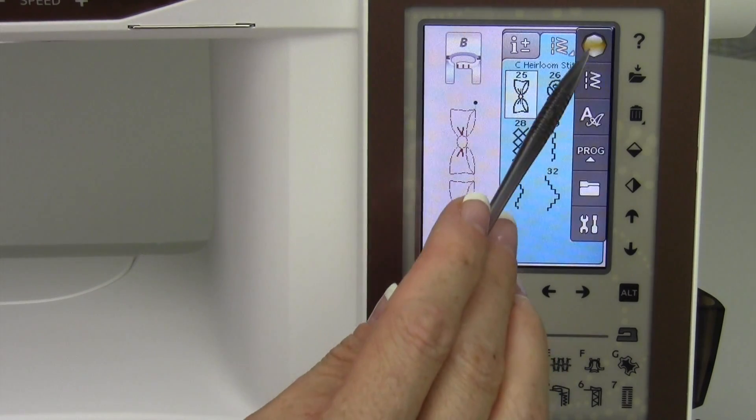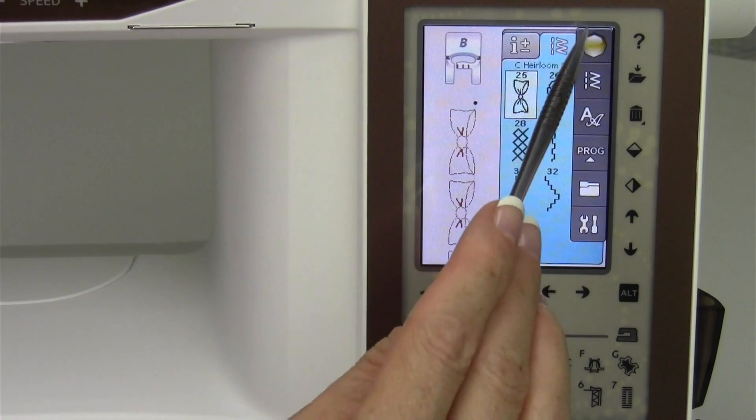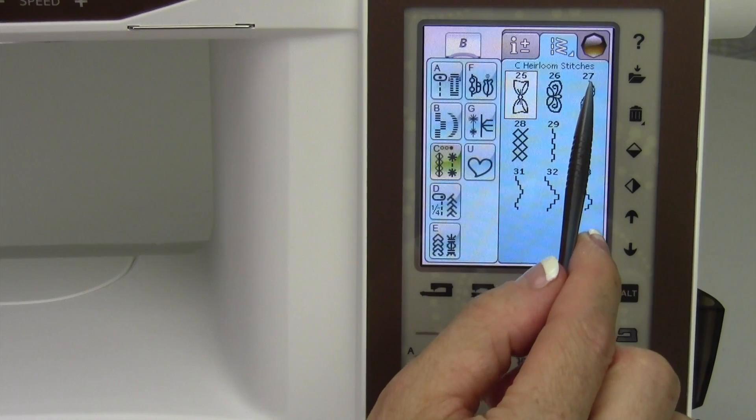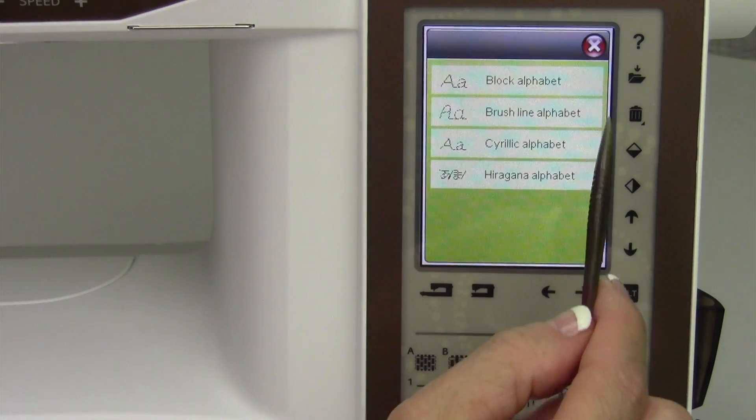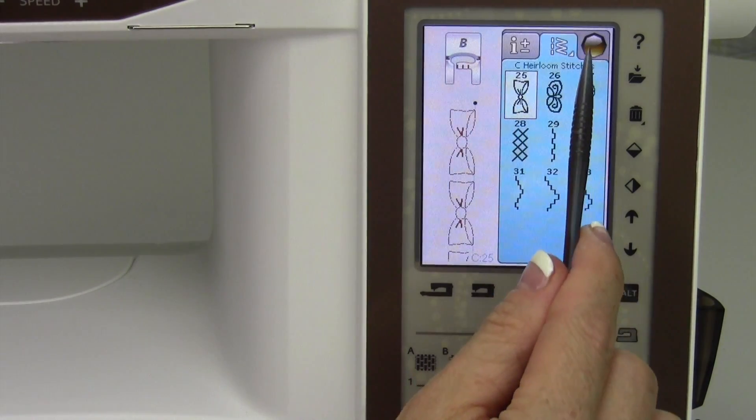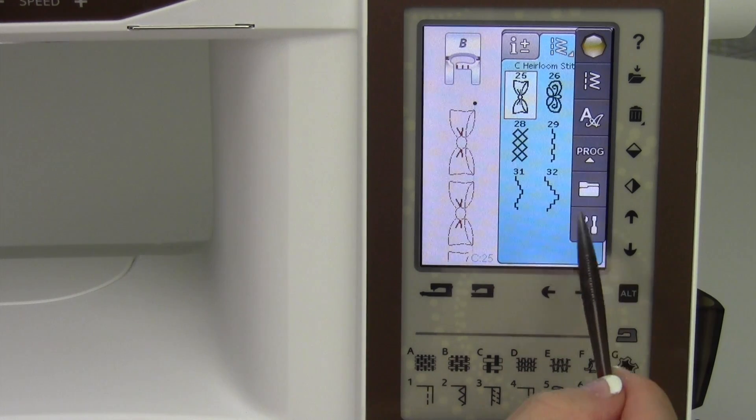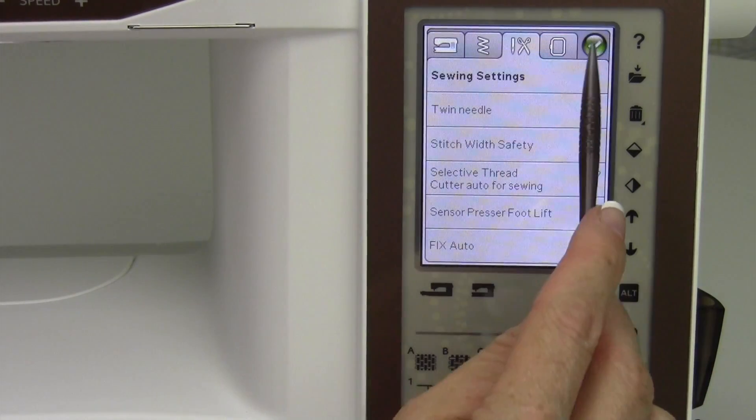You can also pick your stitches if you go over here to the start menu. The start menu will take you down to your stitch menu, your alphabets, your programming of the memory, your opening, and also your set menu where the tools are hanging out. Those we'll go into in more depth.